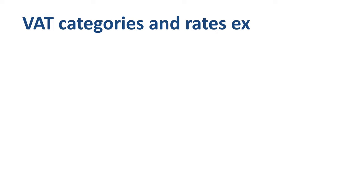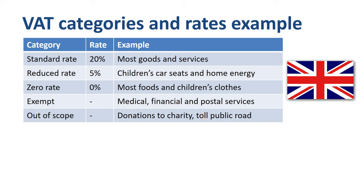Let's go through the VAT categories and rates for the UK as an example. The standard rate for most goods and services is 20%. The reduced rate for things like children's car seats and home energy is 5%. Some items, such as most foods and children's clothes, are taxable but at a rate of 0%. There is a category of services — more specifically medical, financial, and postal services — that is exempt from VAT. There are also transactions that are out of scope, such as donations to charity and tolls for a public road.